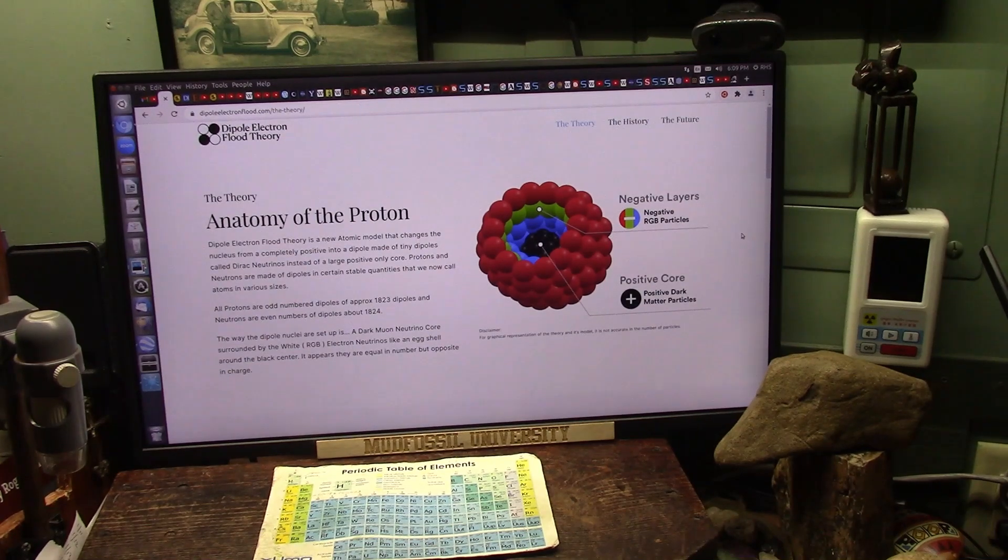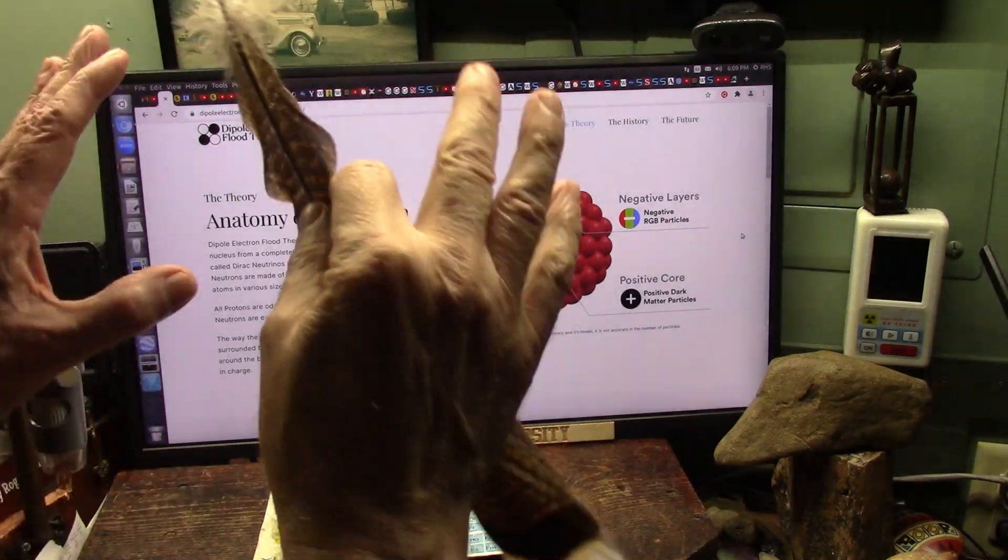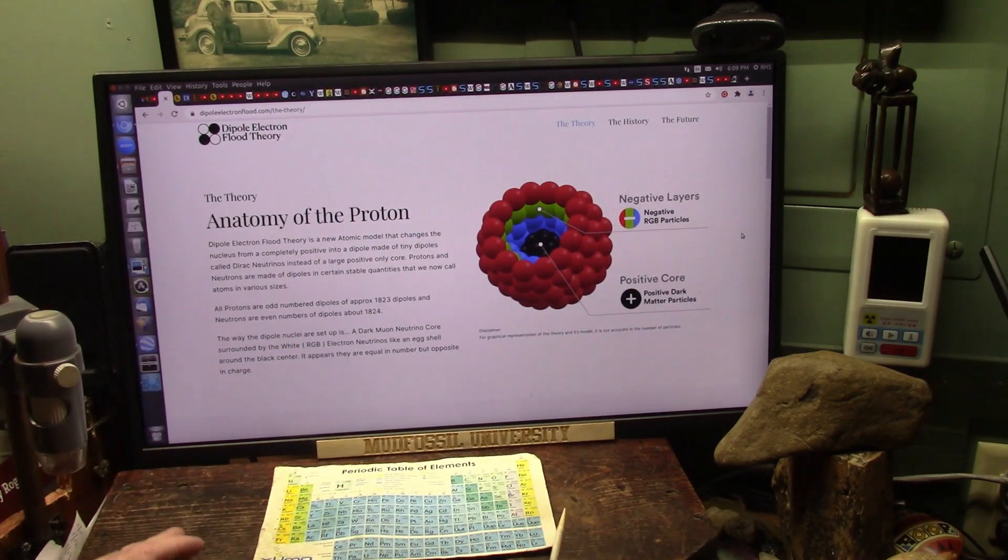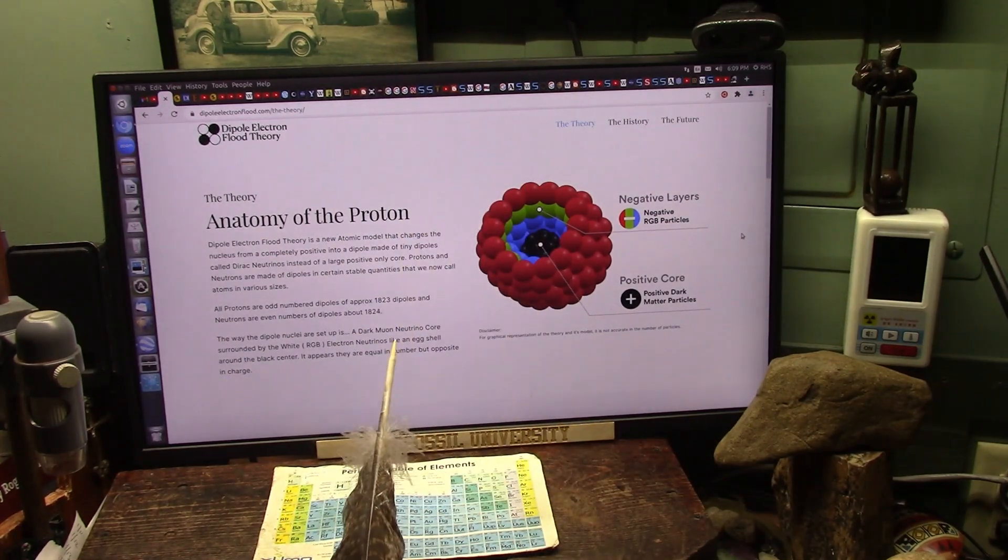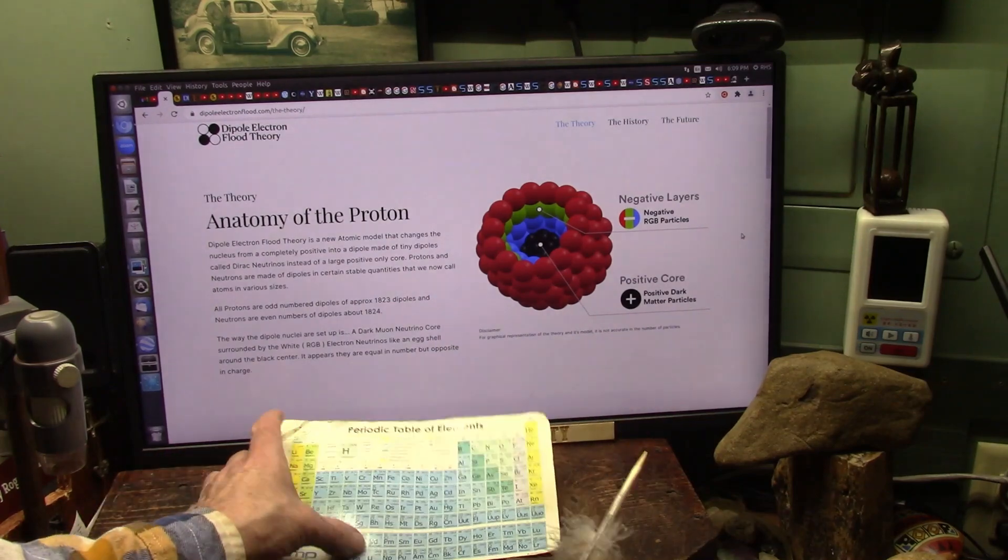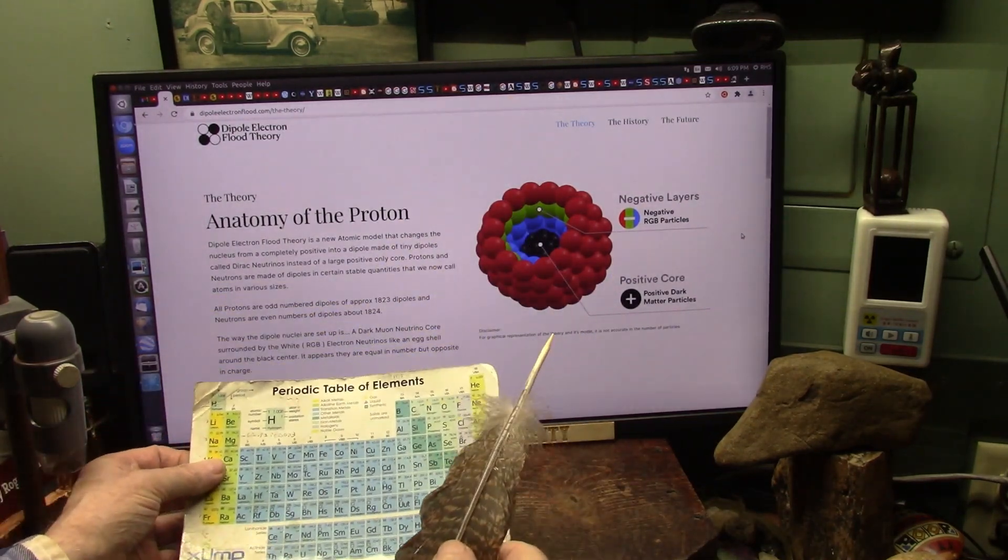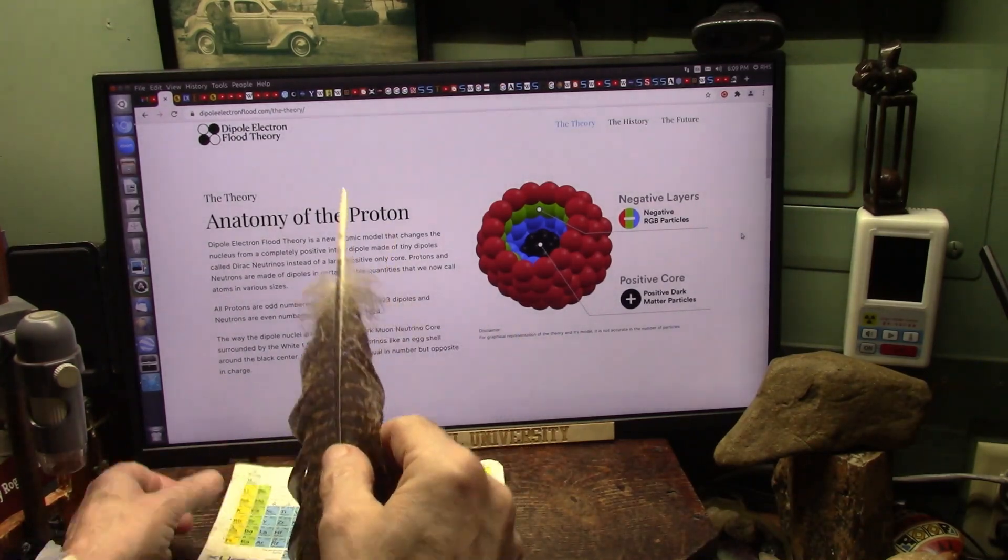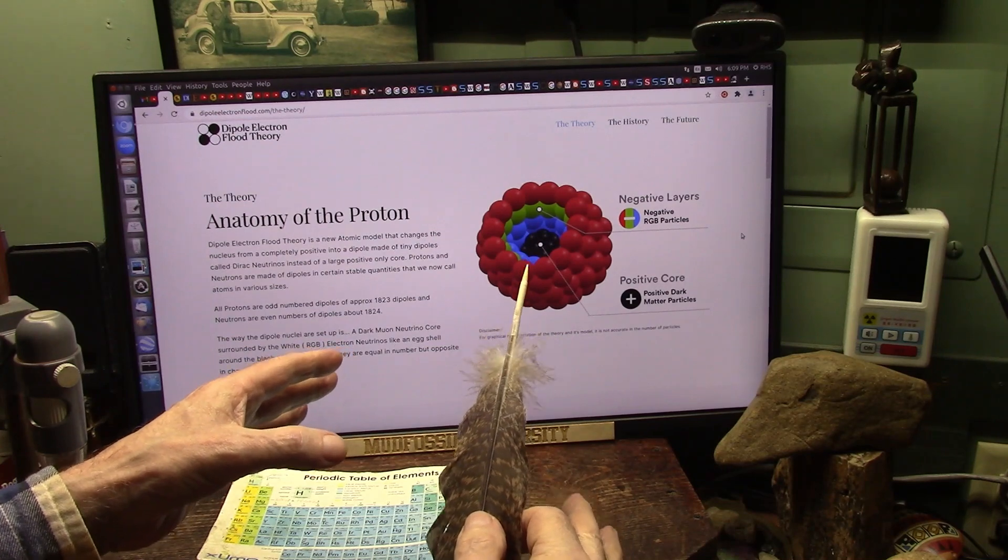Okay my friends, this is going to be very interesting. I am going to be doing a video describing precisely what electron flood theory encompasses. Now it's going to change virtually everything about the atomic model because it's made up of dipoles. I want you to think about this before I do this other video.